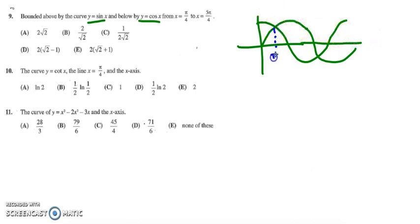So this here is where pi over 4 is and then this here is where 5 pi over 4 is because the two curves do intersect at pi over 4 and 5 pi over 4.